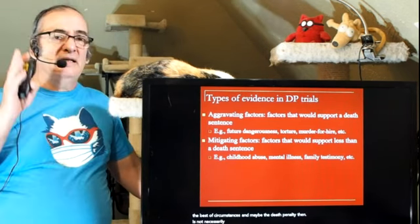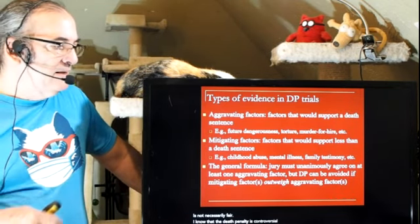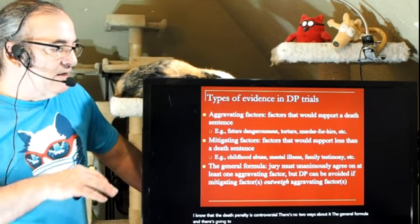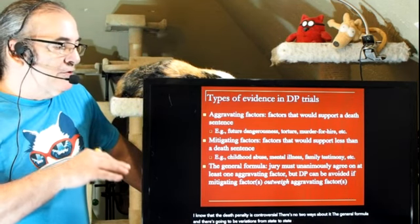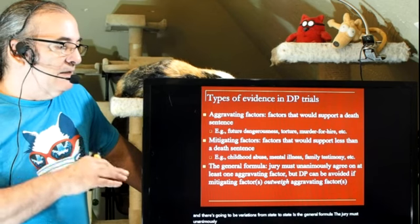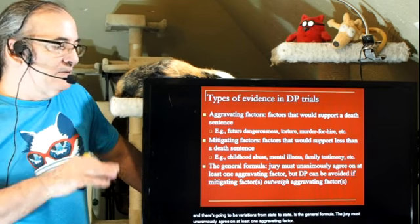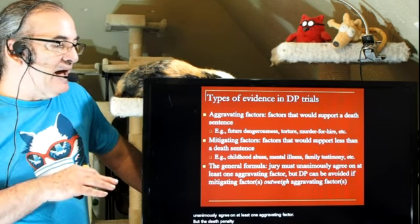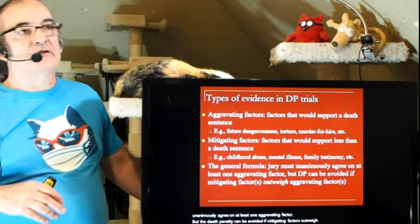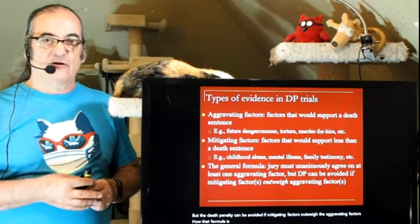The death penalty is controversial. The general formula — with variations from state to state — is that the jury must unanimously agree on at least one aggravating factor, but the death penalty can be avoided if mitigating factors outweigh the aggravating factors. How that formula is presented is via the jury instructions.